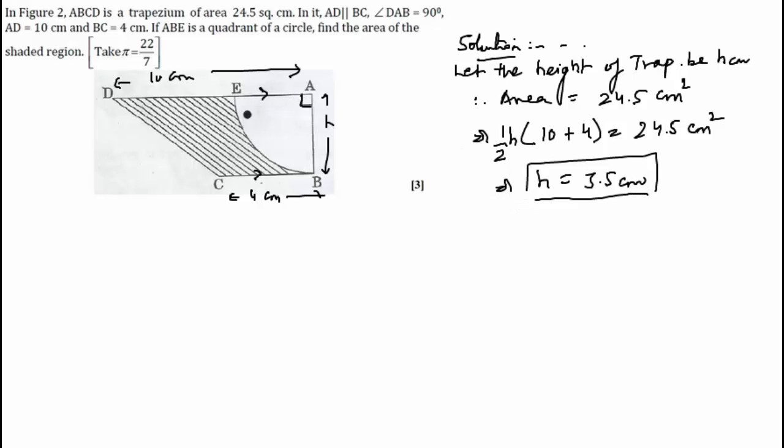Therefore, area of quadrant EAB will be equal to one-fourth area of circle, or we can apply theta by 360 into pi r squared. So that is equal to one-fourth pi r squared, one-fourth times 22 by 7 into 3.5 centimeter squared.